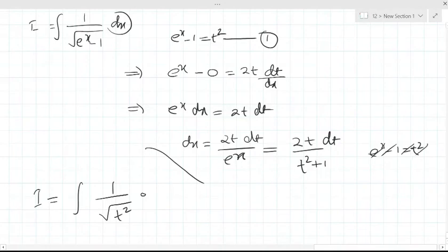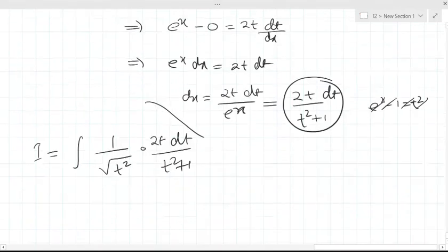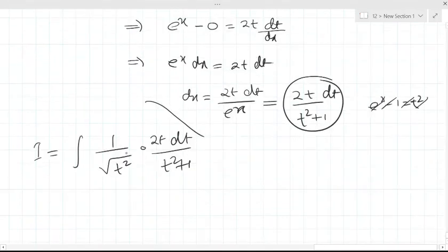Therefore, dx is this much. So I can replace dx in integral by 2t dt upon t square plus 1. Now t and this square root t square can be cancelled because square root of t square is t. 2 can be taken common. t dt upon t square plus 1.